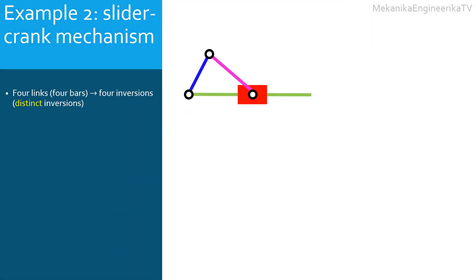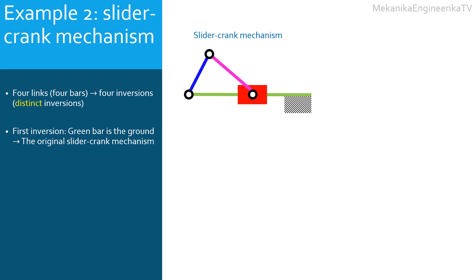The second example deals with the slider-crank mechanism. The slider-crank mechanism is constructed from three bars and one slider, connected together using three pin (turning) joints and one prismatic (translating) joint. Here there are four links, thus there are four possible inversions. The inversions are distinct, dependent on the grounded link and its position relative to the slider. The first inversion is obtained by grounding the green bar — the bar along which the slider is translating. This is the original slider-crank mechanism. The blue bar is the crank, the magenta bar is the coupler, and the slider has a translation motion.